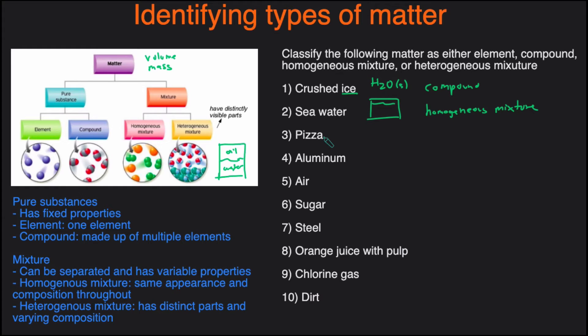Next one, pizza. Pizza, for sure, it's going to be a heterogeneous mixture. Just because a pizza has a lot of ingredients, it has cheese, it can have pepperoni, it can have sausage, but then if I were to get a slice of pizza and you were to get a slice of pizza, the amount of ingredients we get in our slices would be different. So that would be a heterogeneous mixture, just because it has varying composition.